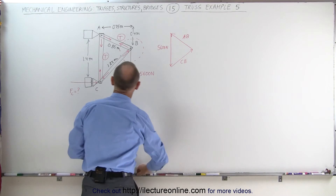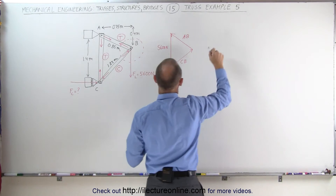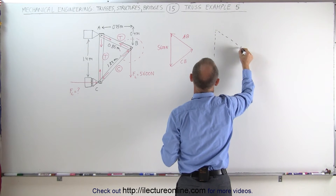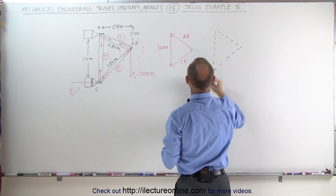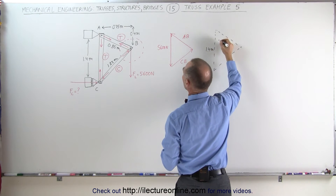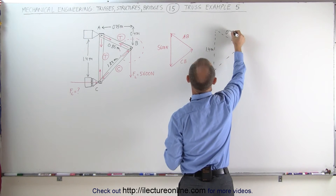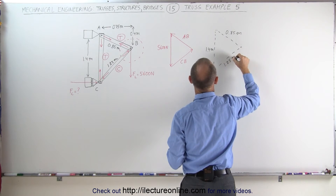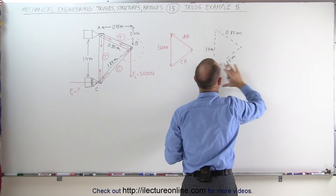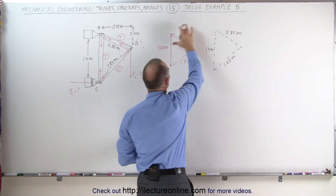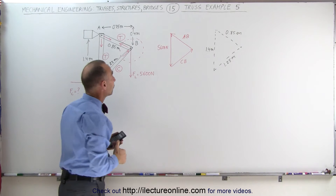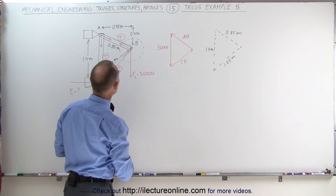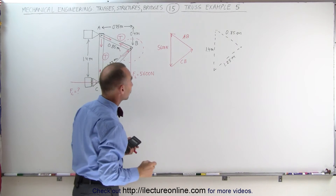Let me draw the triangle made by the truss. So I have a triangle like this — one side like this, and there's the third side. This is 1.4 meters, this here is 0.85 meters, and this here is 1.25 meters. Therefore, the ratios of the lengths here should be proportional to the ratios of the forces associated with member AB and member BC.